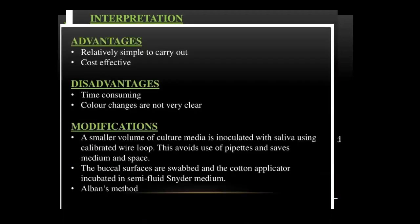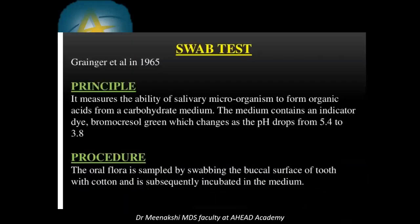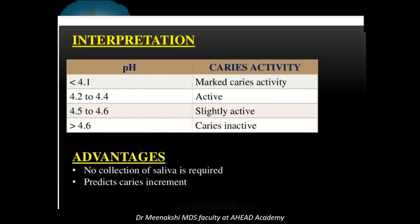The Nider test is a relatively simple and cost-effective but time-consuming method. In 1965, Granger et al. gave us the swab test. In the swab test, we determine the ability of oral flora microorganisms to form organic acids from carbohydrate medium. A pH drop from 5.4 to 3.8 takes place. A cotton swab taken from a particular tooth surface, like the buccal surface, is incubated in the medium. If pH drops below 4.51, it indicates marked caries activity.